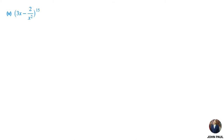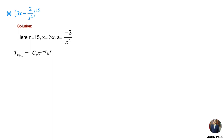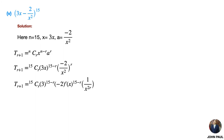Fifth problem: (3x − 2/x²)¹⁵. Solution: here n, x, and a values are written. The general term formula is T(r+1) = nCr · x^(n−r) · a^r. Substitute n, x, and a values.